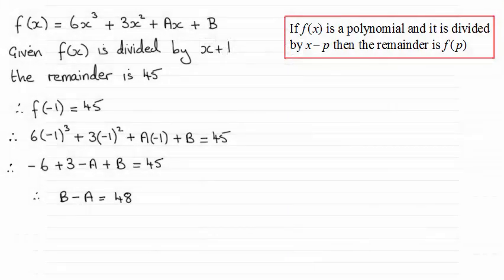Hi there. Now what we have here is a typical question on using the remainder theorem where we had to show that b minus a was equal to 48 given f of x equaled this expression here and that when f of x was divided by x plus 1 the remainder was 45.